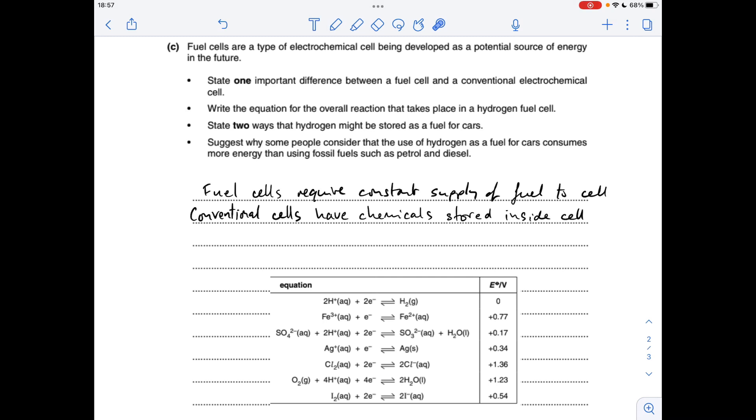Finishing off with part C, I've already written up the first bullet point there. The difference between a fuel cell and a conventional electrochemical cell is that fuel cells require a constant supply of fuel going to the cell, whereas conventional cells have chemicals stored inside the cell.